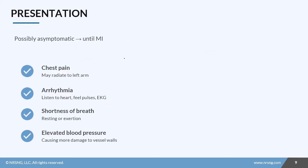It's important to understand that the patient may not have any symptoms until they have a heart attack or myocardial infarction. If they do have symptoms, they may have chest pain even while resting that might radiate to their left arm. They may have arrhythmias that will show up on the EKG, and you might feel an irregular heart rhythm when listening to their heart or feeling their pulses. They might also have shortness of breath at rest or on exertion.